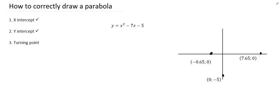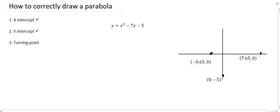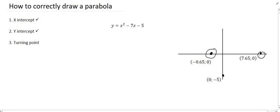The first method is to find the middle value between your two x-intercepts. To do that, you just add them together — the minus 0.65 and the 7.65 — and then you divide that by two. It's like taking the average. That's one way to do it.